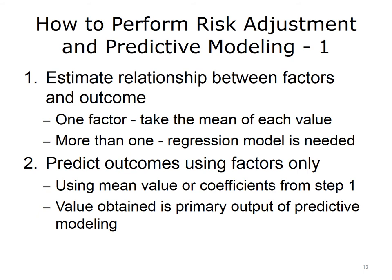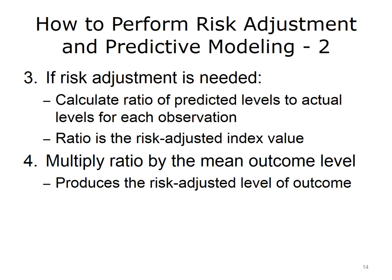Step 2: predict the outcomes for each observation, based on the mean value or the coefficients from the regression model in Step 1. Step 3: if risk adjustment is needed for a group of observations, such as a clinic, then for each group calculate the ratio of the mean predicted levels from Step 2 to the mean actual levels. That ratio is the risk-adjusted index value for the group's outcome. Step 4: multiply the ratio by the mean outcome level. This produces the risk-adjusted level of the outcome for the group.